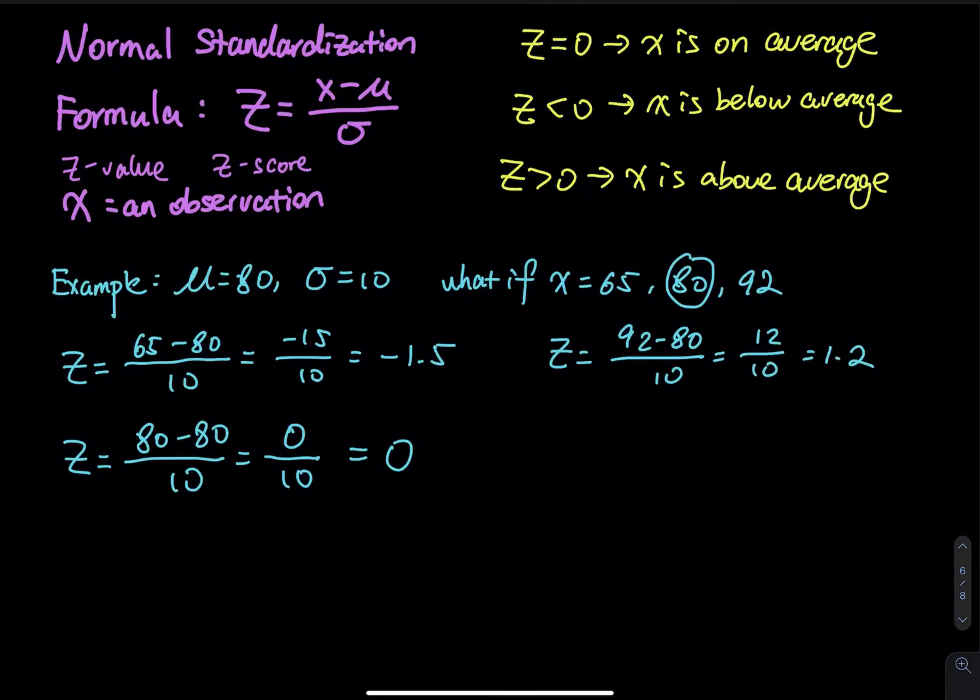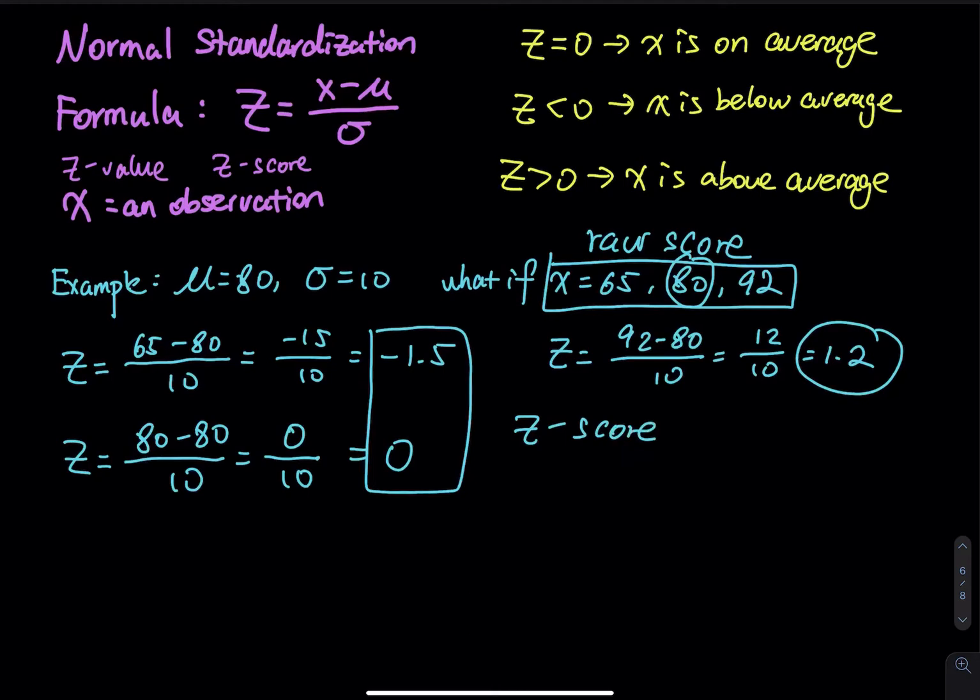Again, 1.2 is not your score. 1.2 is your standardized score. That means you are 1.2 standard deviations above average. So the x value, you can call them a raw score. Raw score is whatever points you got on your paper. And then this, we call that a standardized score or z score.